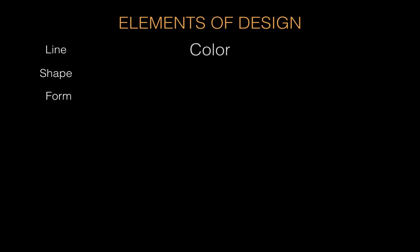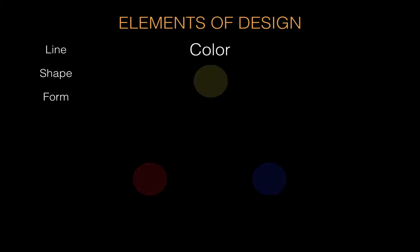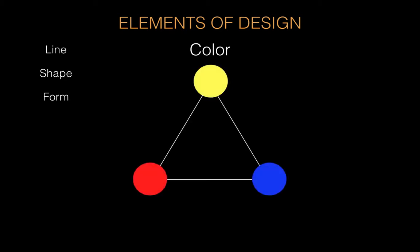This brings us to our next element: color. Color is a whole world of its own, and we could spend lesson upon lesson just on color, but I'll try and give you the briefest overview of all the comprehensive basics for color theory. You have three primary colors — the colors that you can mix together to make any other color in the spectrum. However, there are two sets of primaries because light and pigment behave differently.